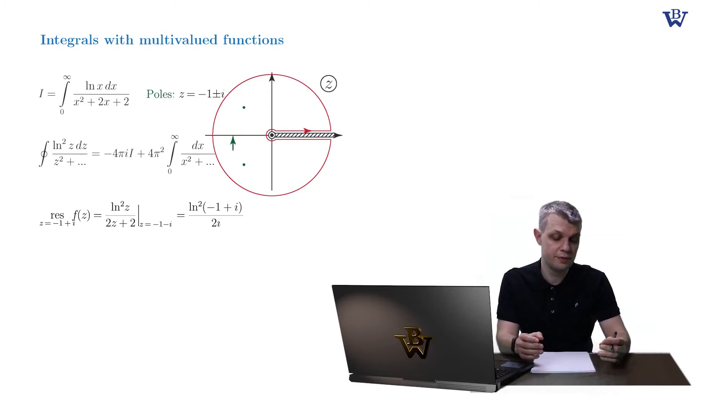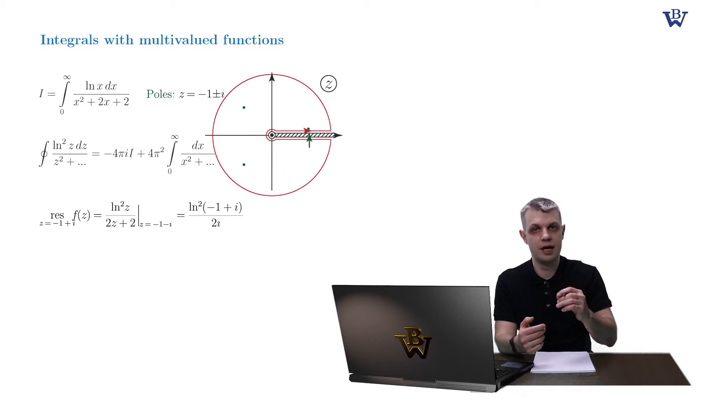And we need to compute the value of our log function at point minus 1 plus i. We use the standard formula which you probably memorized by now. So what we do? We take a reference point somewhere on the upper bank of our branch cut, connect it with our point in question, and then trace the change of the argument of this z number.